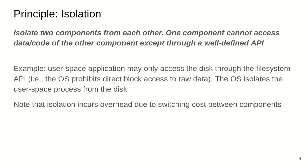The first principle is isolation. With isolation, the goal is to isolate and separate two components from each other so that one component cannot access data or code of the other except through a well-defined API that security researchers clearly review, lay out, and enforce. For example, a user-space application may only access the disk through the file system API — the OS prohibits direct block access to raw data. Isolation incurs overhead due to switching costs between components.